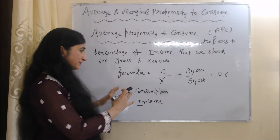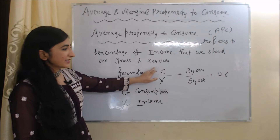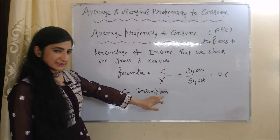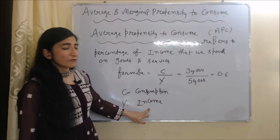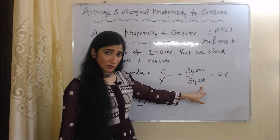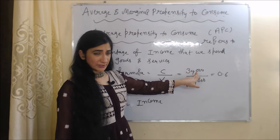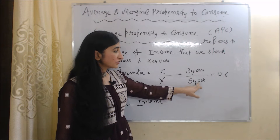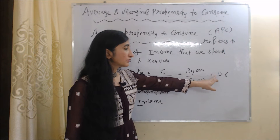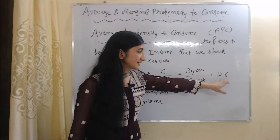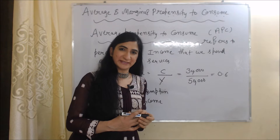The formula of APC is C over Y, where C is consumption and Y is income. For example, if our income is 50,000 and our consumption is 30,000, then 30,000 over 50,000 is equal to 0.6, and 0.6 is our APC.